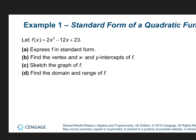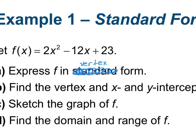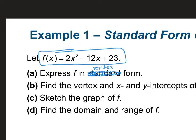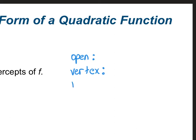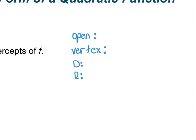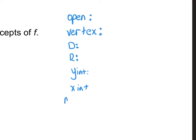If I have a question like this — f(x) = 2x² - 12x + 23 — they're going to tell me to do all these different things. We're going to answer which way it opens, what the vertex is, what the domain is, what the range is, the y-intercept, the x-intercept, maximum or minimum value, and we're also going to put it in vertex form.